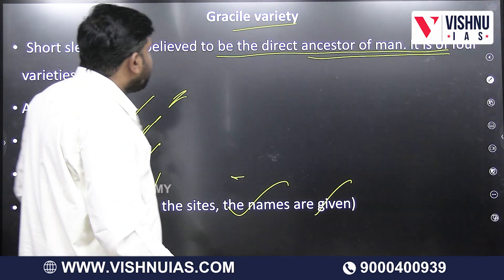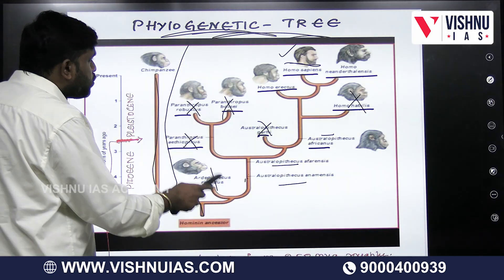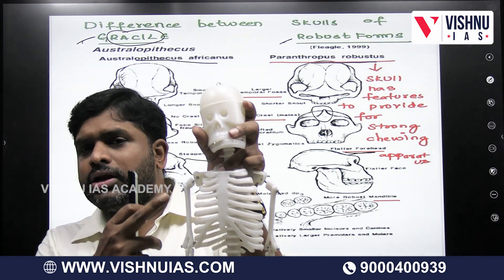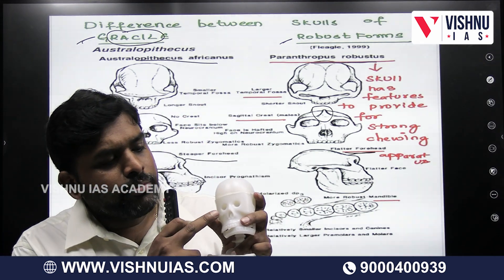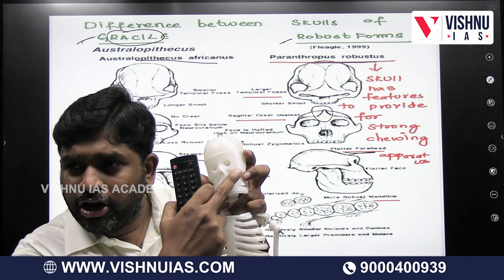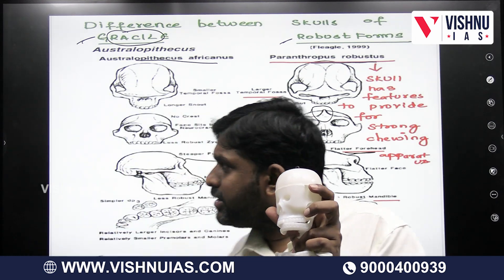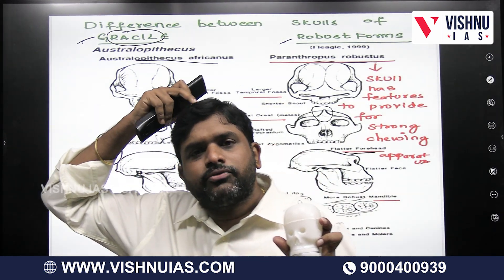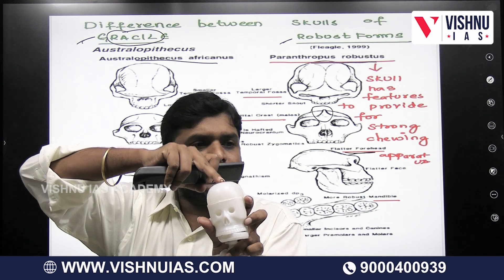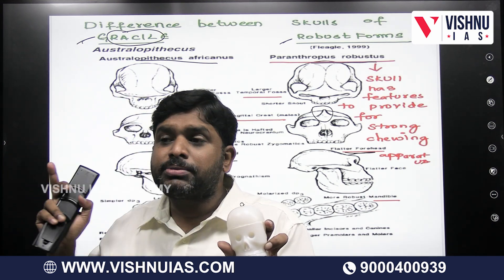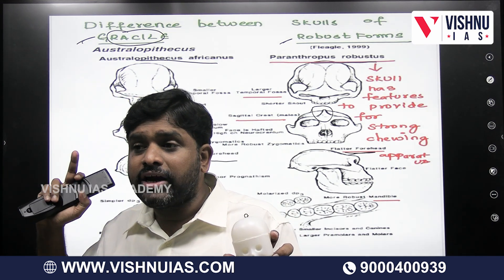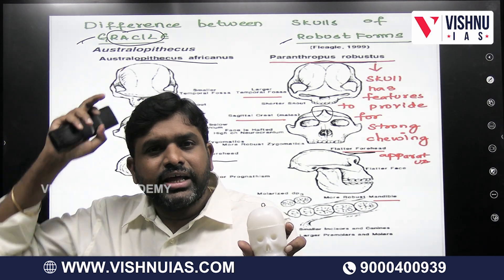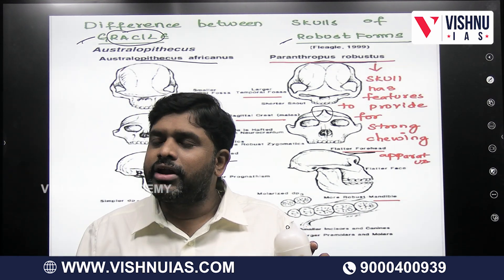When comparing the Gracile and Robustus varieties by examining skulls, we look at the Temporal Fossa — the region from here to here. The next feature we compared is the Sagittal Crest, a bony ridge-like eruption. This Sagittal Crest is present in the Robustus variety but is not present in the Gracile variety.